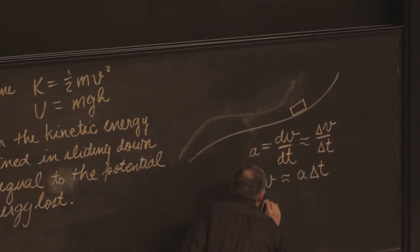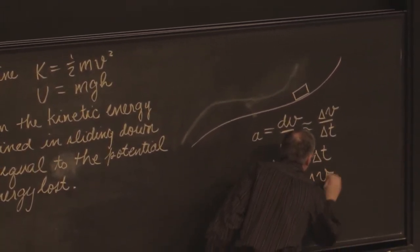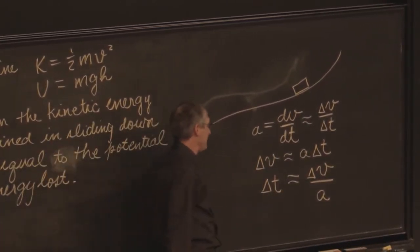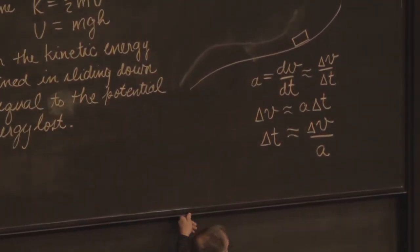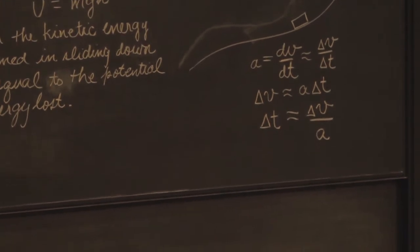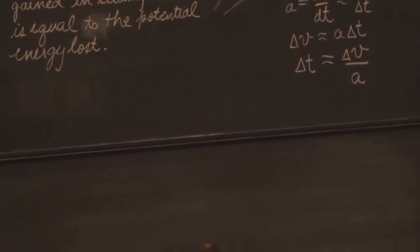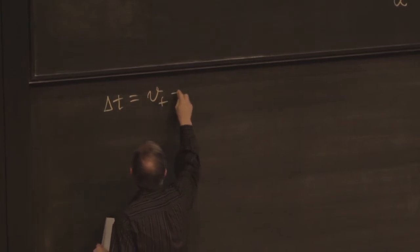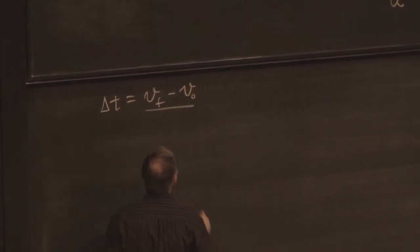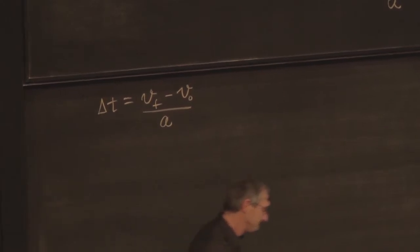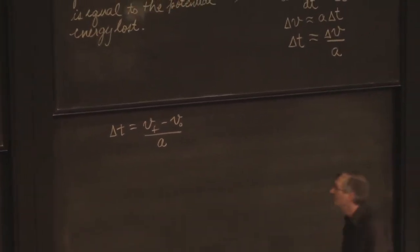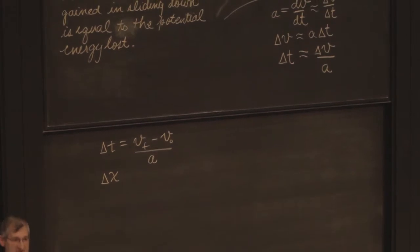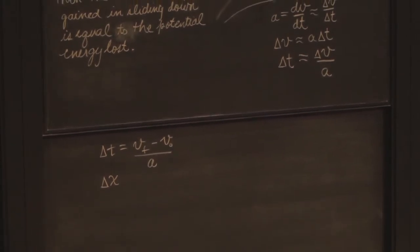Or delta t is about the change in the velocity divided by the acceleration. So delta t, v final minus the initial for this little interval over the acceleration. How far will it go in that time? Which v should I use?